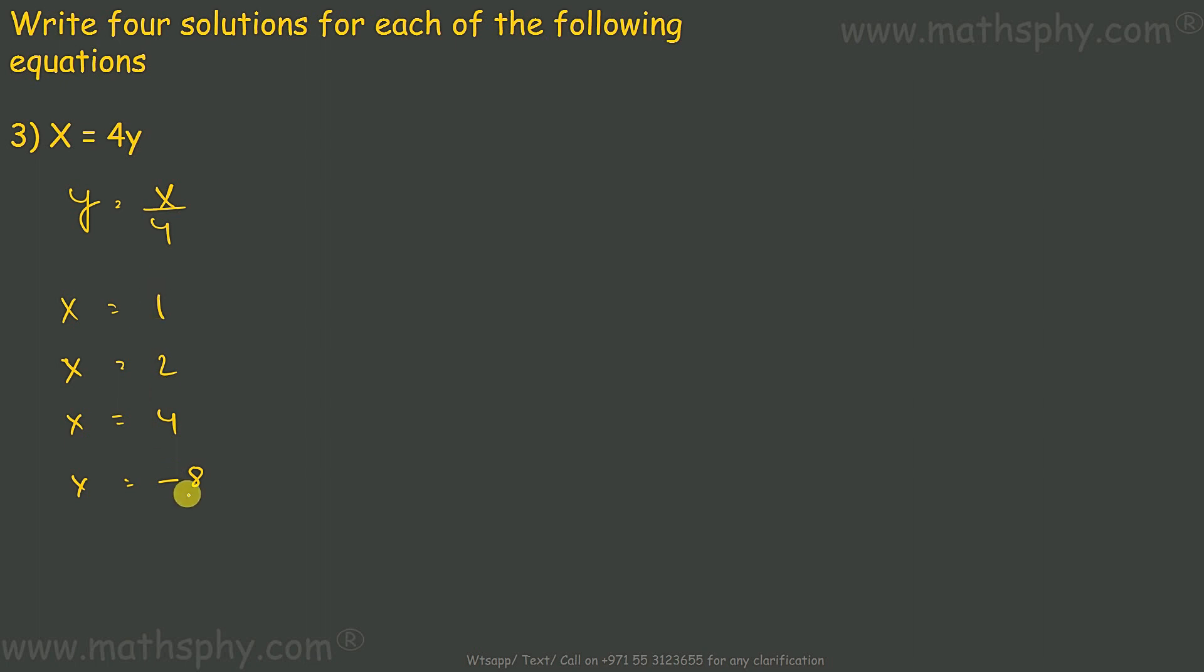These are random numbers I am choosing. So, y equals to x over 4 means, x is 1, 1 over 4. The first solution would be, x is 1, y is 1 over 4.